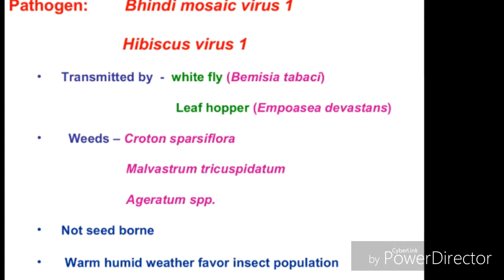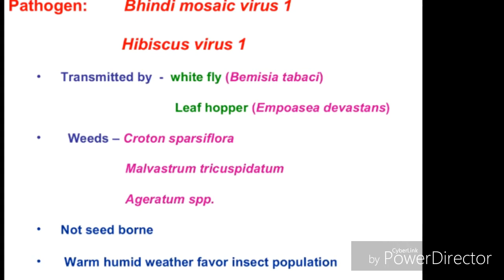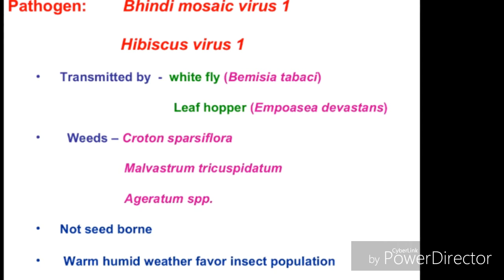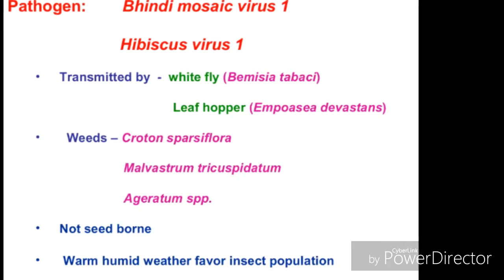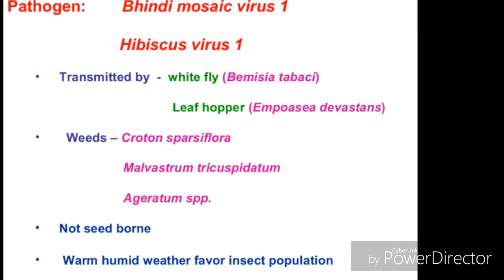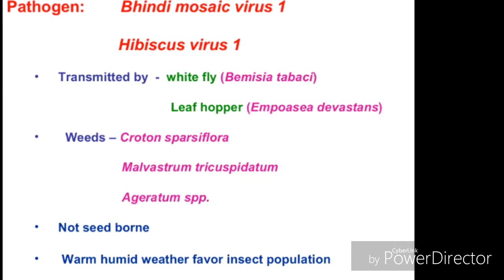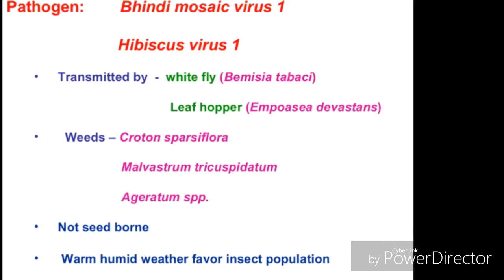It is transmitted by whitefly, Bemisia tabaci, and leafhopper Amrasca devastans. Weeds that can serve as hosts include Croton sparsiflorus and Ageratum species. It is not seed-borne, meaning it does not infect through pollinated seeds.